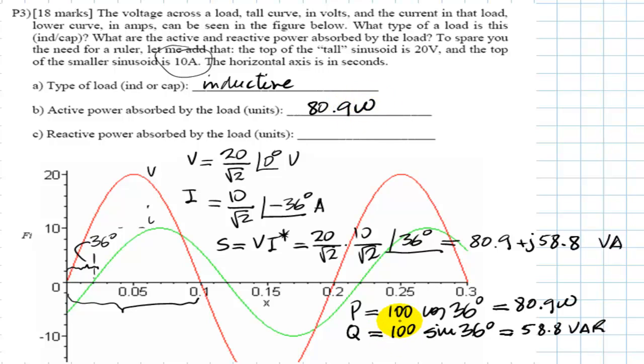And the reactive power is, of course, the imaginary part of this complex number, which is just 200 times the sine of 36. That is Q equals 58.8 var. 58.8 vars. And that is the solution to question number 3.